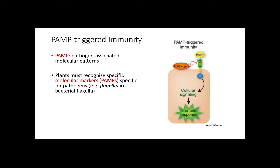Once a pathogen manages to invade a plant, PAMP-triggered immunity may initiate. PAMP stands for Pathogen-Associated Molecular Patterns. PAMPs are specific molecular patterns that belong to certain pathogens, and plants must recognize these markers in order to trigger a response. PAMPs trigger a signal transduction pathway that ends up in an immune response. Often, the response associated with PAMP-triggered immunity corresponds to the production of phytoalexins, which are chemicals with antimicrobial properties.